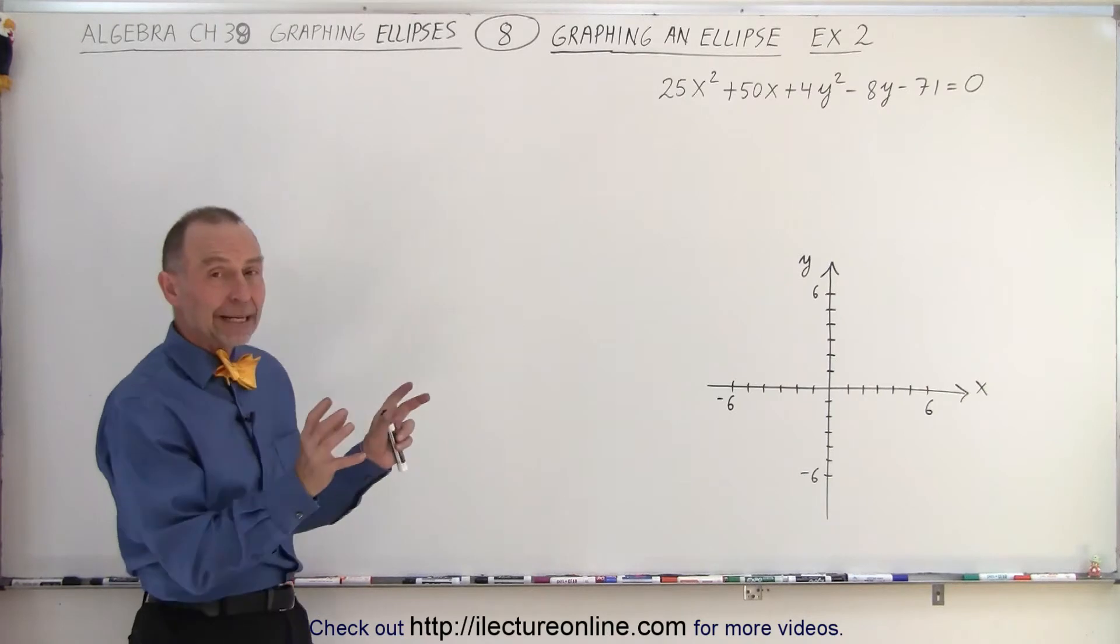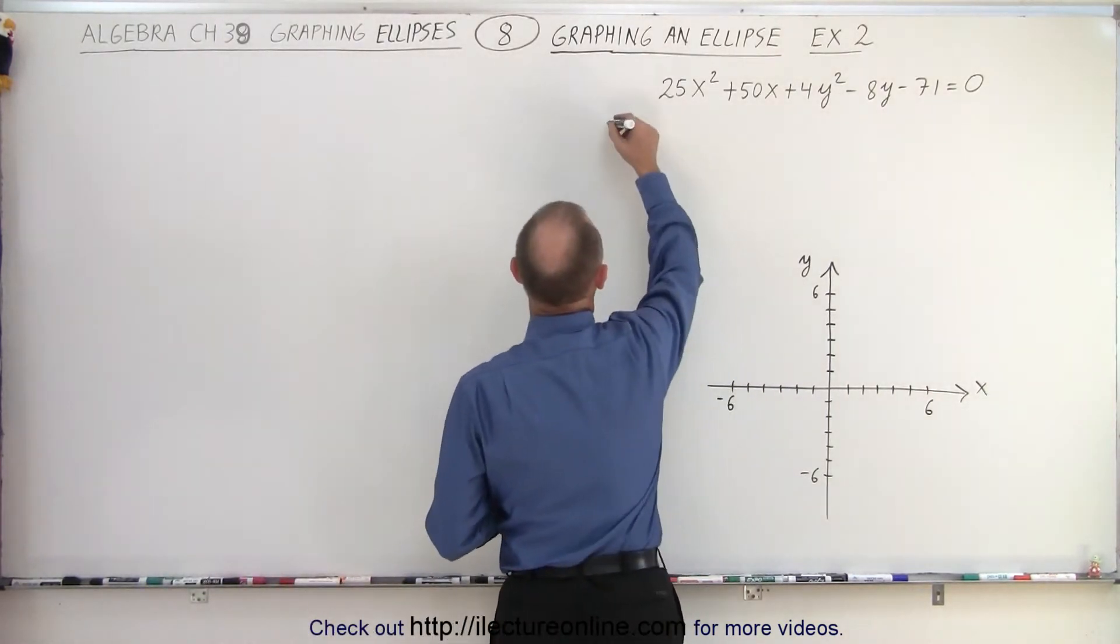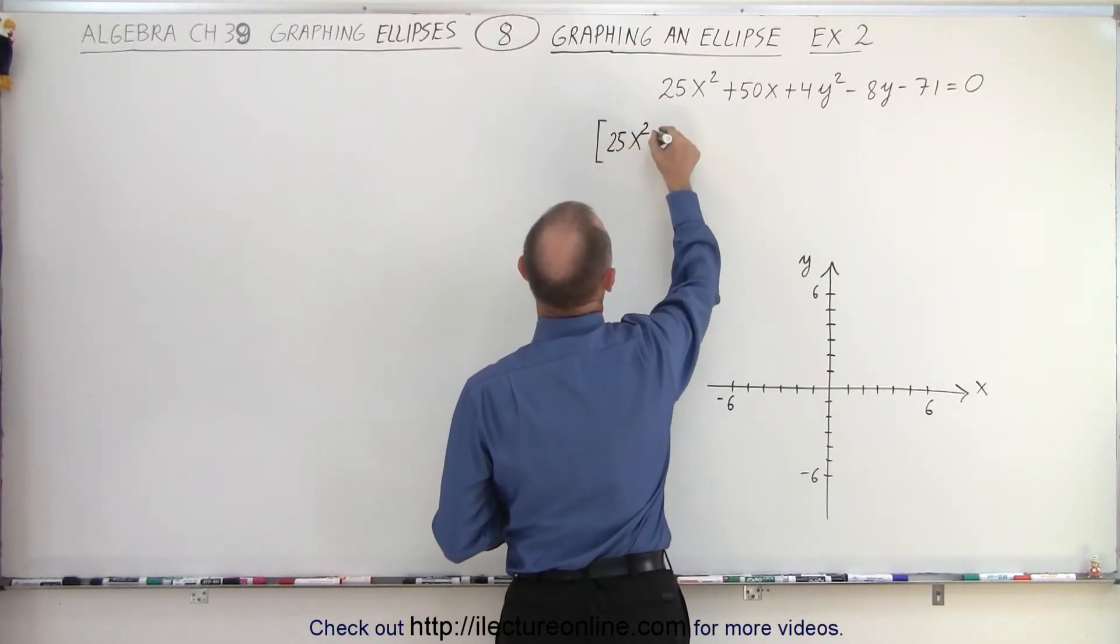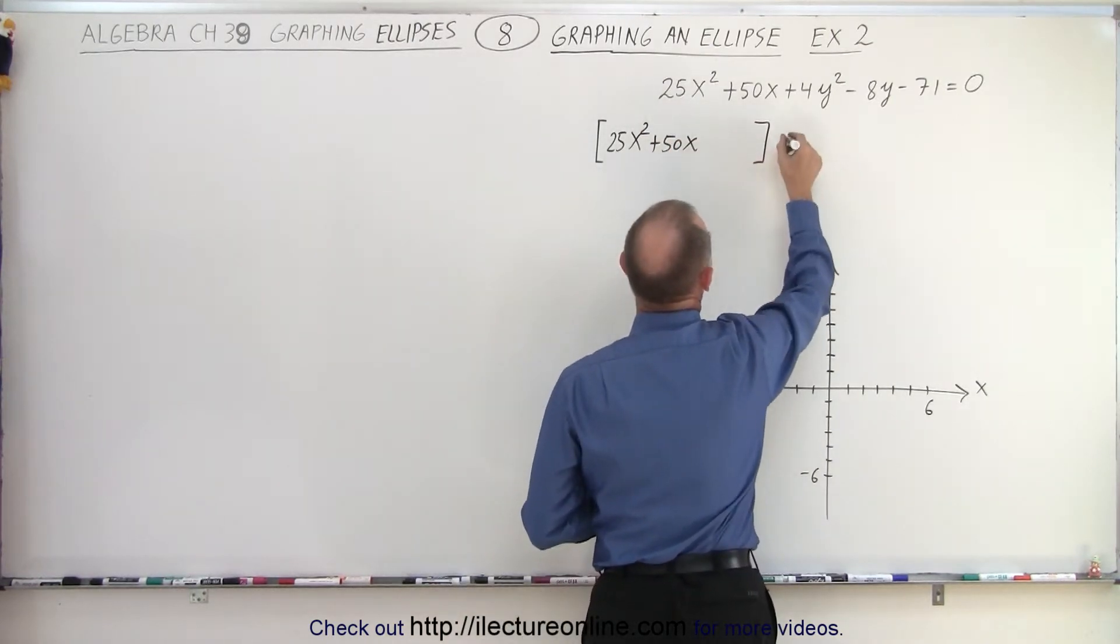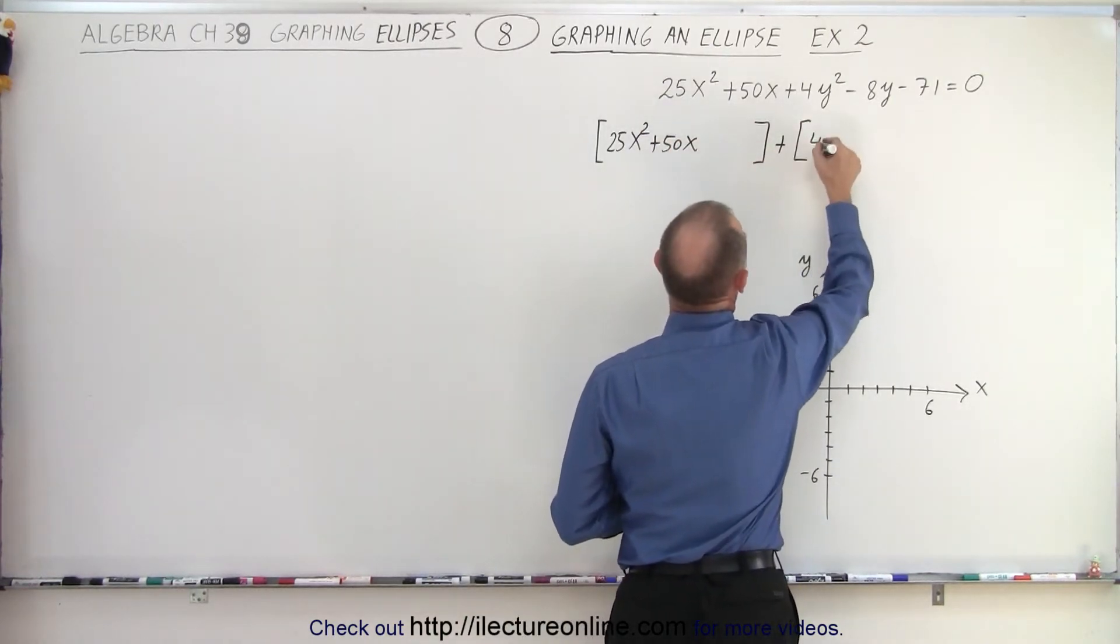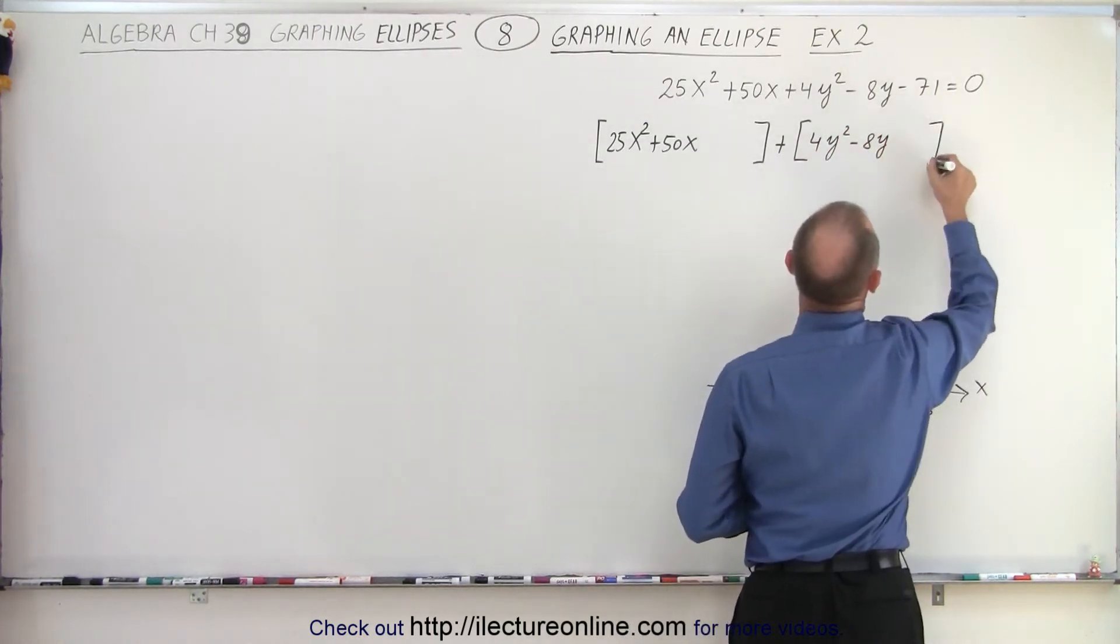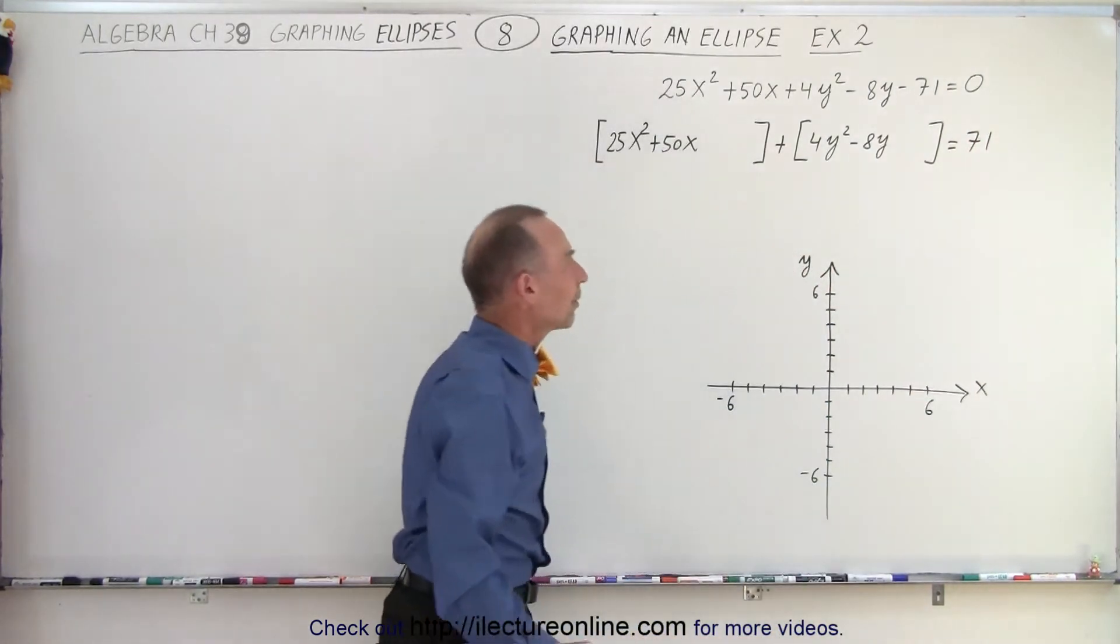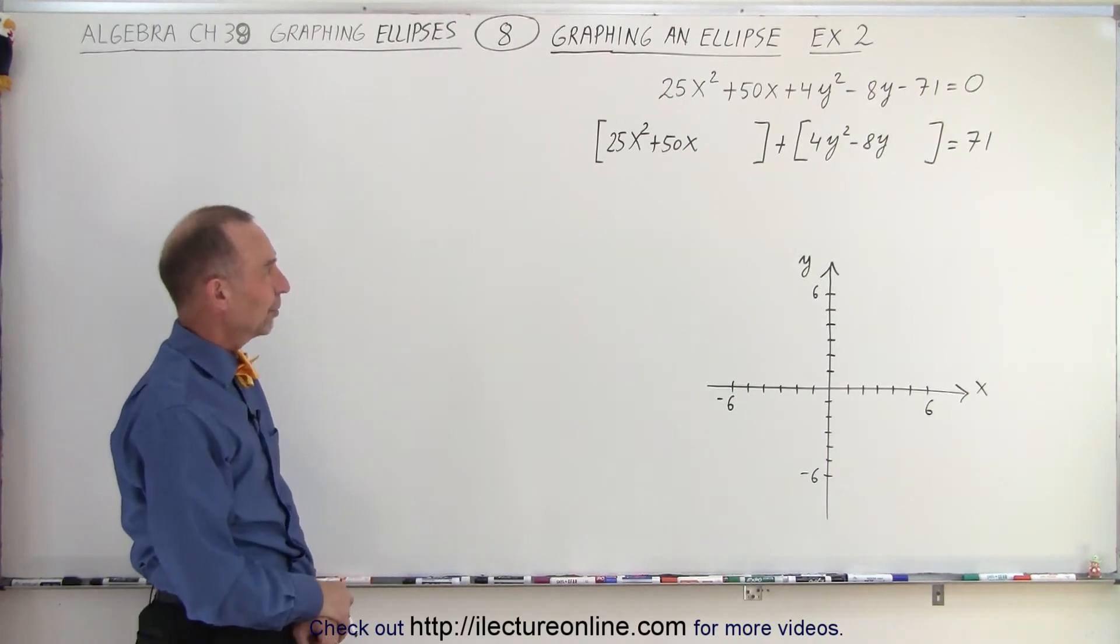what we need to do is separate the x terms from the y terms and put them in little brackets. So 25x² + 50x, and then we leave some space, plus 4y² - 8y equals, move the 71 across, the negative 71 becomes a positive 71. That's usually a pretty good step to separate the x and the y terms.